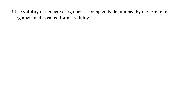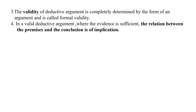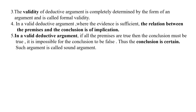The third characteristic of deductive argument: the validity of a deductive argument is completely determined by the form of the argument, and it is called formal validity. Fourth, in a valid deductive argument where the evidence is sufficient, the relation between the premises and the conclusion is one of implication — the if-then form. That is, if the premises are true, then the conclusion is true; and if the conclusion is false, then one of the premises is false. It is impossible for the conclusion to be false when all the premises are true in a valid deductive argument.